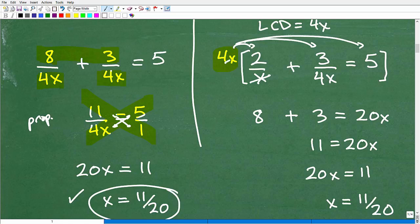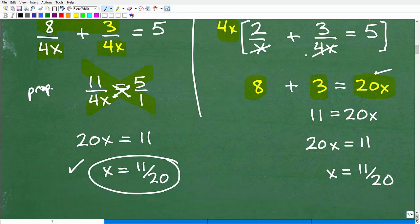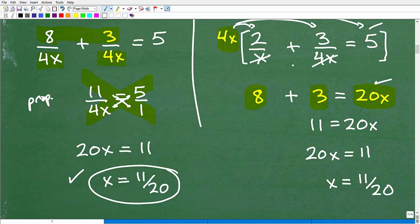So 4x times 2 over x, the x's here cross-cancel, so you're left with 4 times 2. So that's 8. Now we have to go ahead and multiply this 4x times this 3 over 4x. The 4x is cross-cancels here, just left with 3. And then lastly, I have 4x, and I got to multiply that 4x times 5 here, and that's going to be 20x. So if some of this algebra is kind of bothering you, then obviously you want to brush up on your basic equation solving, the distributor property, etc. But if you're with me so far, let's continue on.